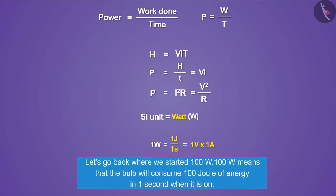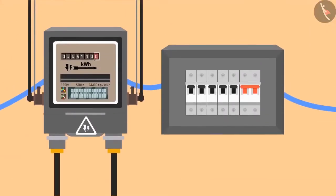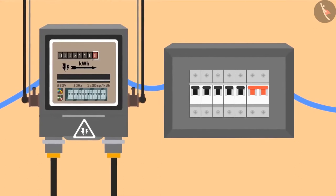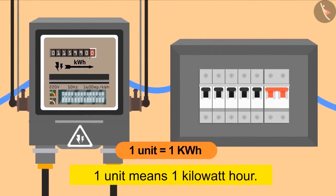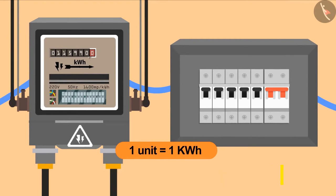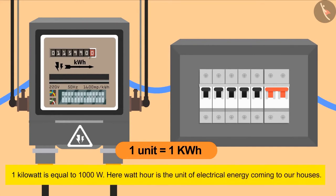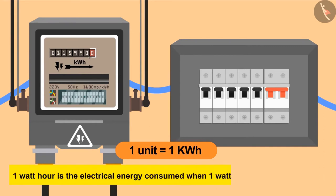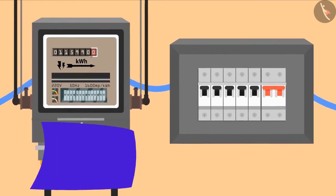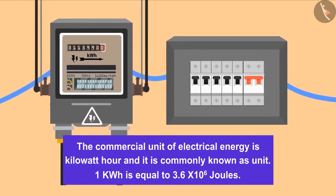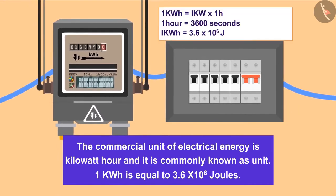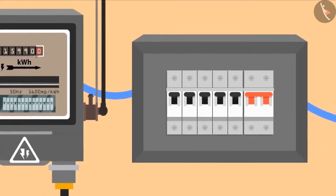Your homes must have electricity meters, and you must have heard that 50 units of electricity have been used. Do you know what these 50 units are? One unit means one kilowatt-hour. We use kilowatt because watt is a very small unit — one kilowatt equals 1000 watts. Watt-hour is the unit of electrical energy coming to our houses. One watt-hour is the electrical energy consumed when one watt of power is used for one hour. The commercial unit of electrical energy is kilowatt-hour, commonly known as a unit. One kilowatt-hour is equal to 3.6 × 10⁶ joules. After this video, I hope you have understood the power supply of your homes better.